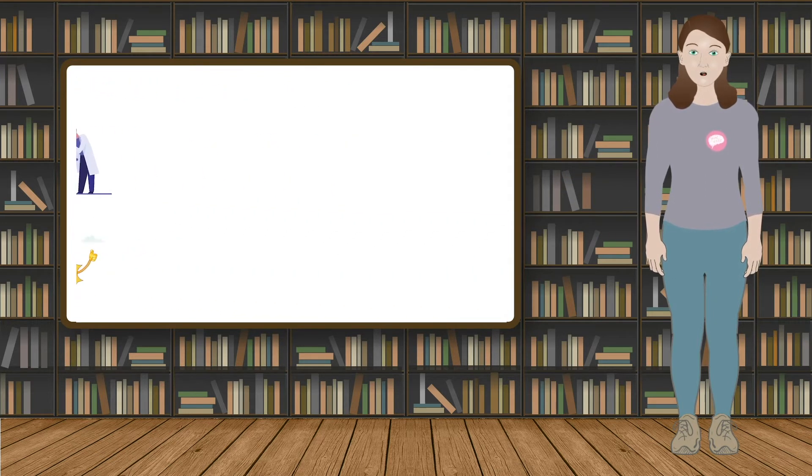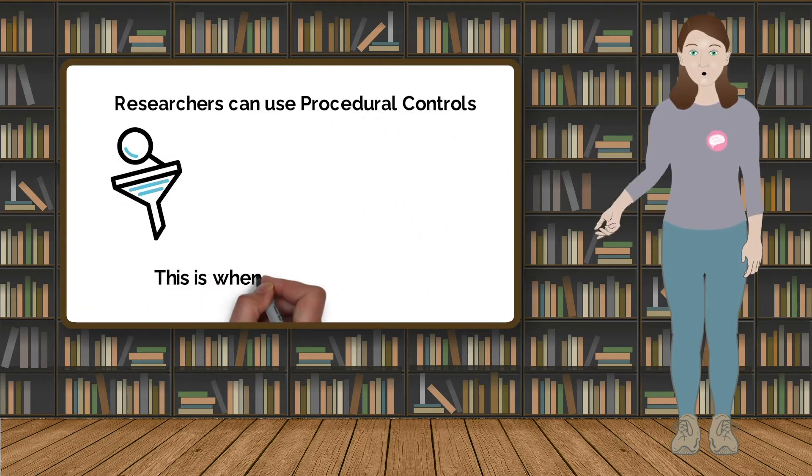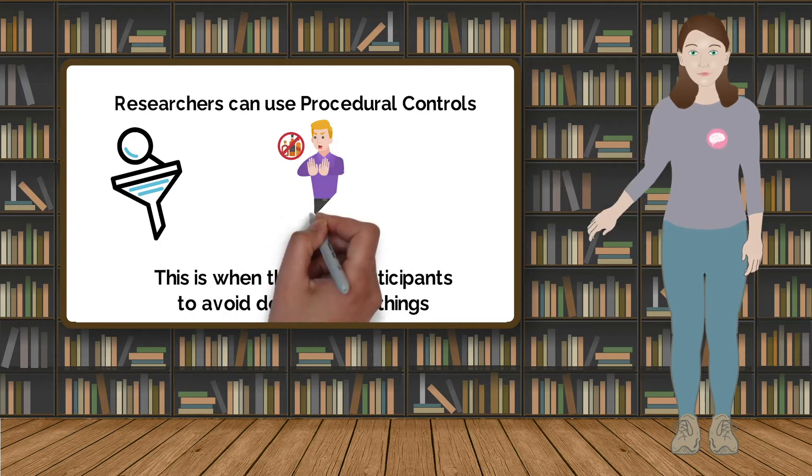Researchers can also use procedural controls, which is where they specifically instruct the participants to avoid doing certain things which may have an extraneous influence on the DV.